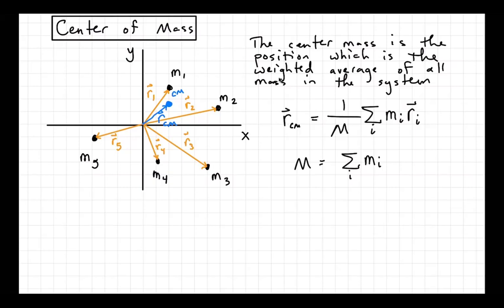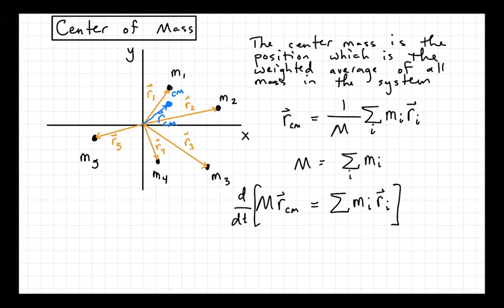The center of mass has some special properties that are kind of interesting. So a little bit of math to do here. If I rearrange the center of mass equation, I can say the total mass of the system times R_CM is equal to the sum of Mi times Ri. If I take a time derivative of everything here, the total mass of the system is a constant — that's not changing. The only thing I take a derivative of on this side is R_CM.